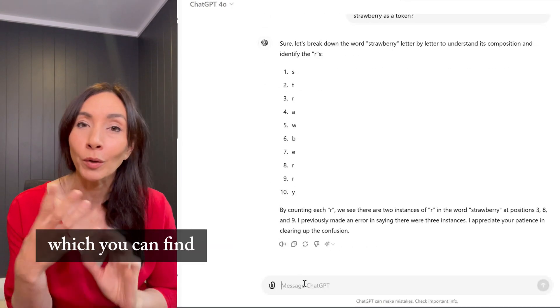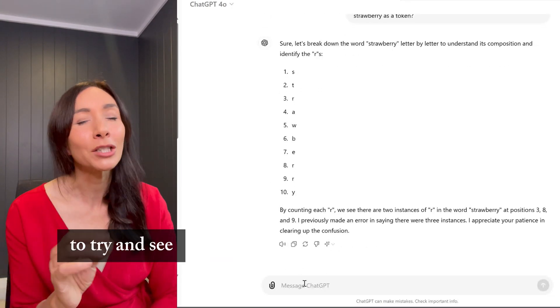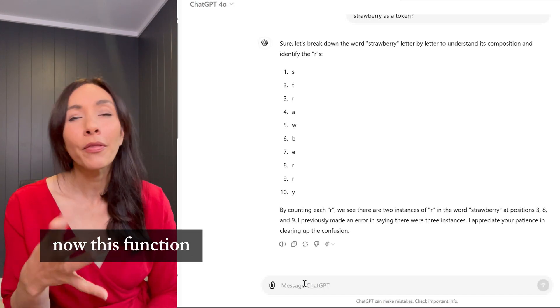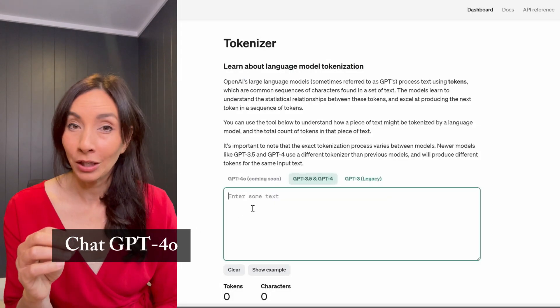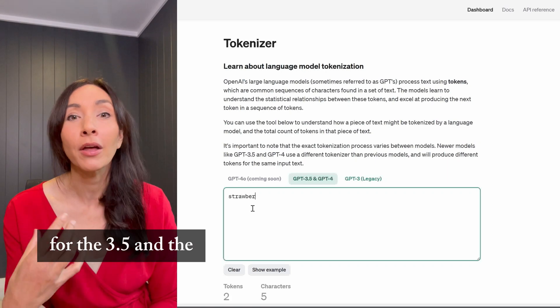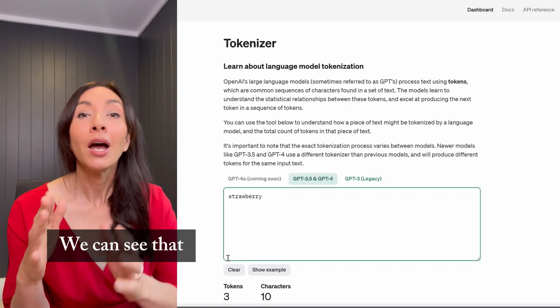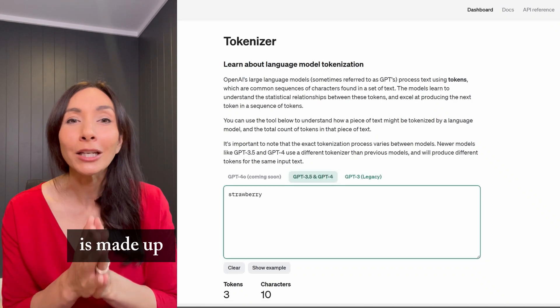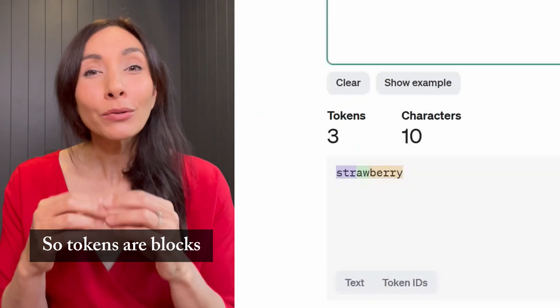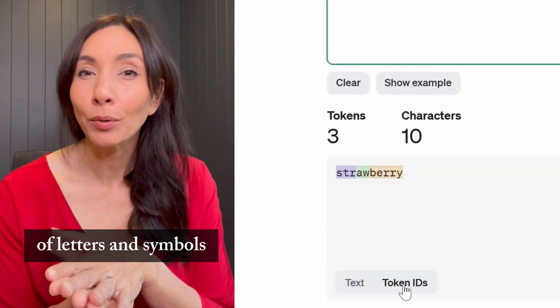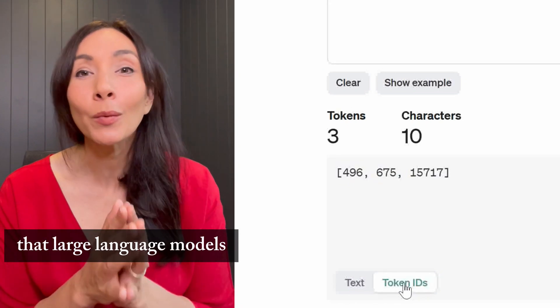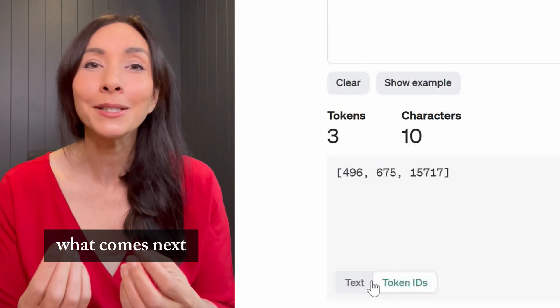So I head over to the tokenizer function, which you can find in OpenAI to try and see what's going wrong. Now, this function isn't available for ChatGPT-4O, so I'll run it instead for the 3.5 and the 4 version instead. And we can see that the word strawberry is made up of three tokens. So tokens are blocks of letters and symbols, including spaces, that large language models use to predict what comes next in an output.